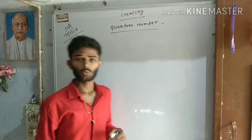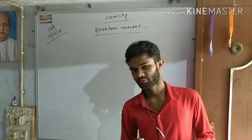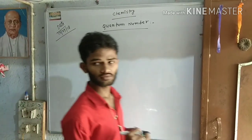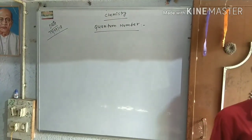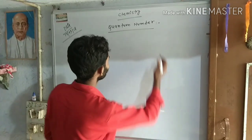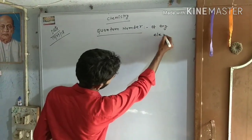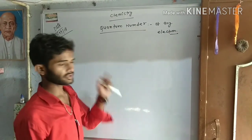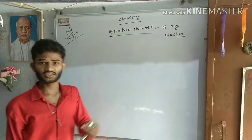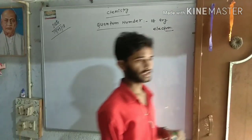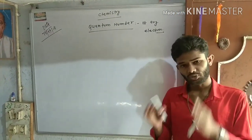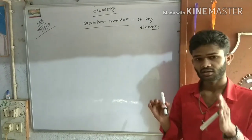Quantum numbers is the group of four quantum numbers, which deals about the position, energy, magnetic moment, and spin of any electron. यानि quantum number किसी electron के बारे बताता है — electron का position क्या है, उसकी energy क्या है, उसका magnetic गुण क्या होता है, और उसके spin के बारे बताता है कि electron किस direction में spin करता है।